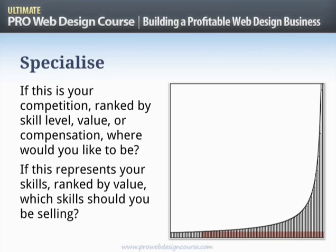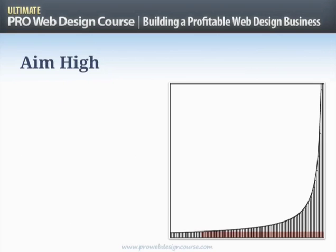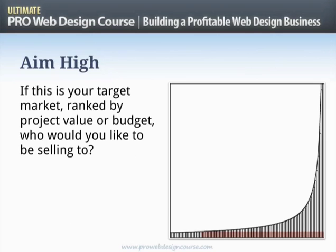If the curve represents your skills ranked by value, we've seen that 80% of the time you spend will generate just 20% of the value you create. The minority — your top 20% of hours invested or the skills you exercise — will actually generate the majority of your profits. So which skills should you be selling? The answer is pretty obvious.